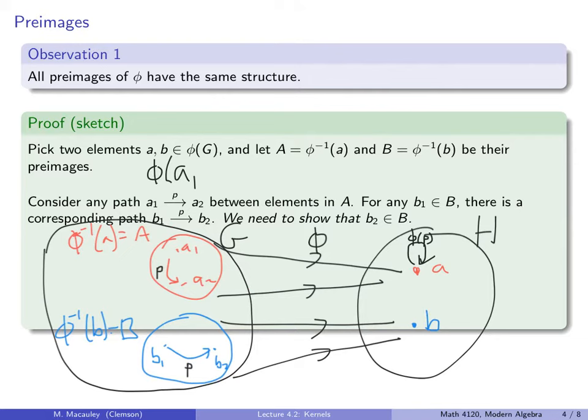Before I make the explicit connection to cosets, let me formally define something I've casually defined. In set notation, the kernel is the set of all elements in the domain that get mapped to the identity in the codomain. Time for observation two — it has two parts. Part one: the preimage of the identity, capital K for kernel of phi, is a subgroup of the domain. And part two: all other preimages are left cosets of K.